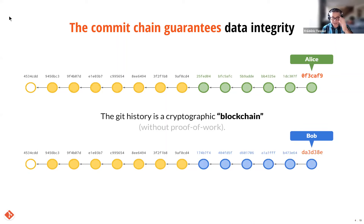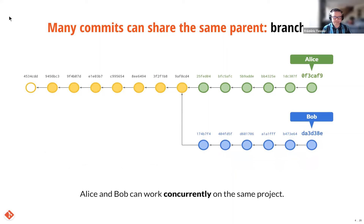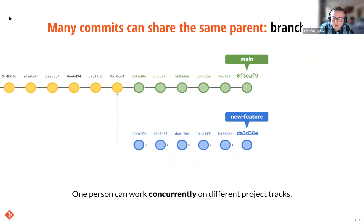Since Alice and Bob share the same commits, we can simplify the diagram into a network of commits. Different commits may share the same parent, leading to what are called branches in Git. This is great because now Alice and Bob can work on the same project at the same time, each on their respective branches — maybe Bob is writing the introduction and Alice is writing the theory section. Note that even if you work all by yourself, you can use branches to work on different parts of your project — for example, implementing a new feature without messing up the main working version.